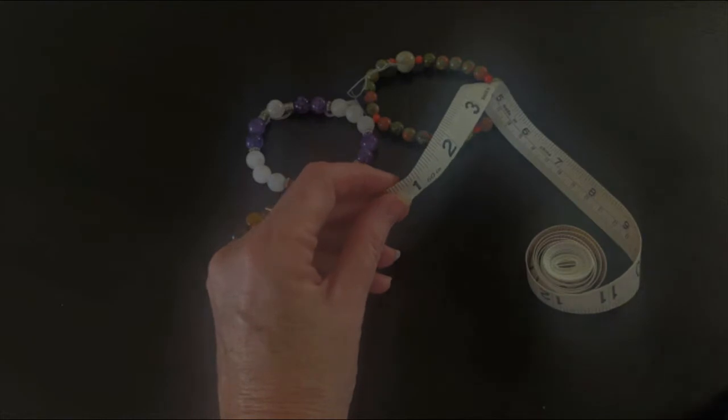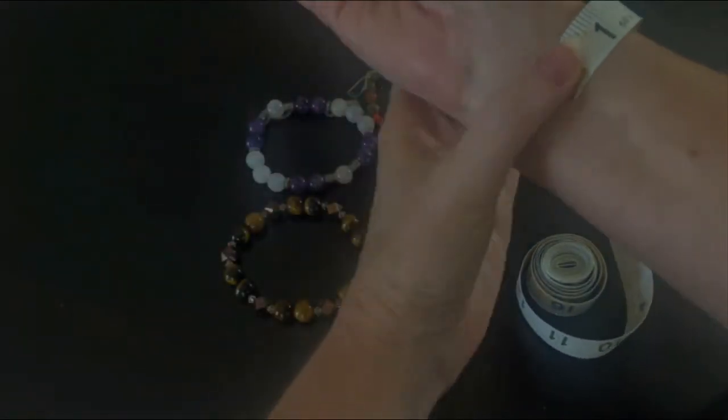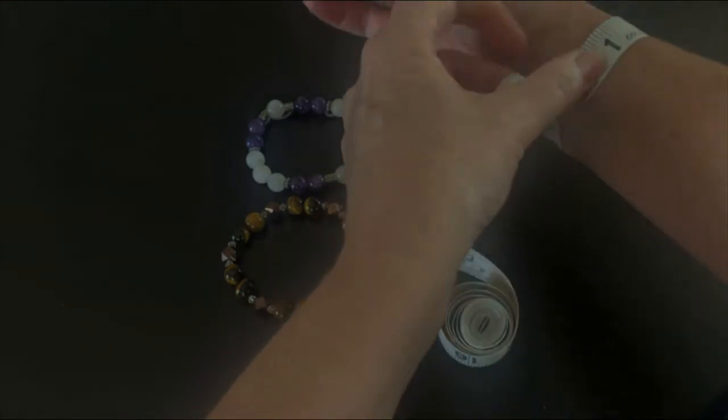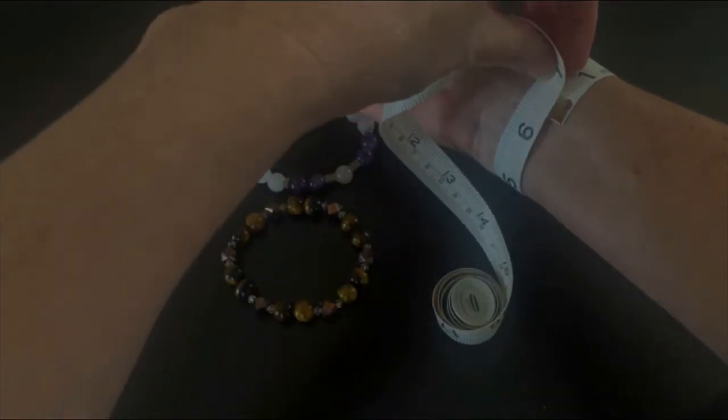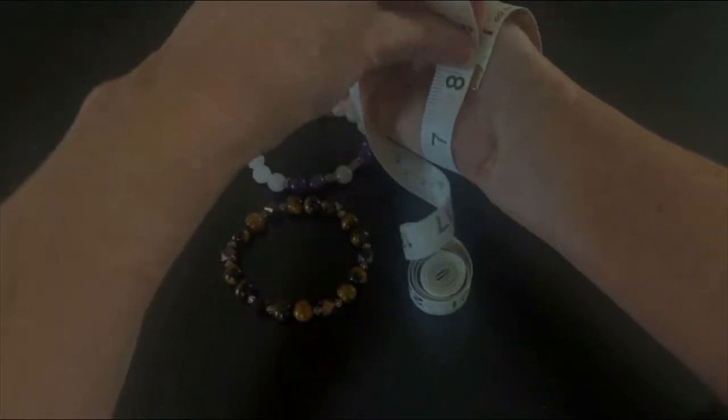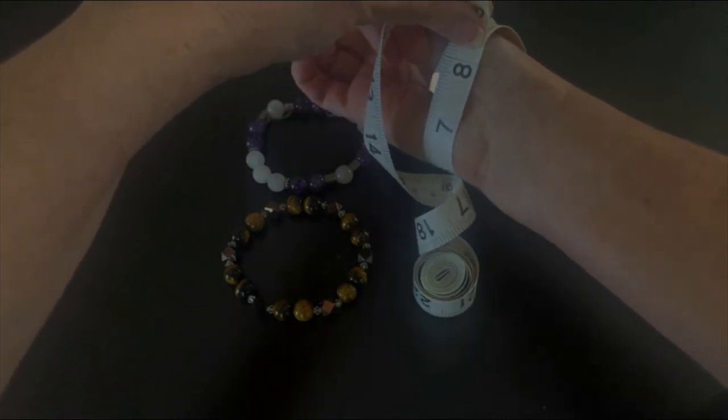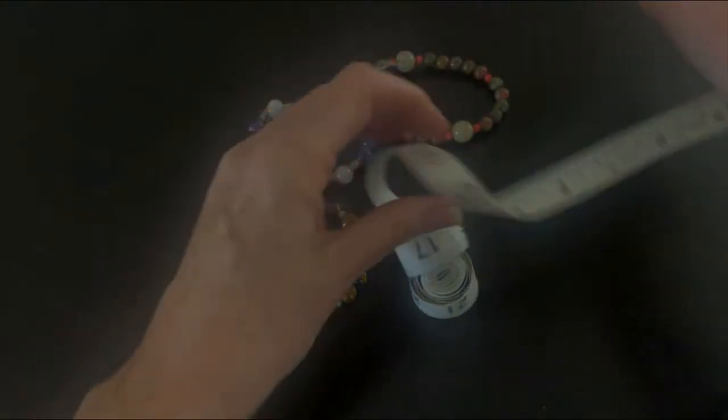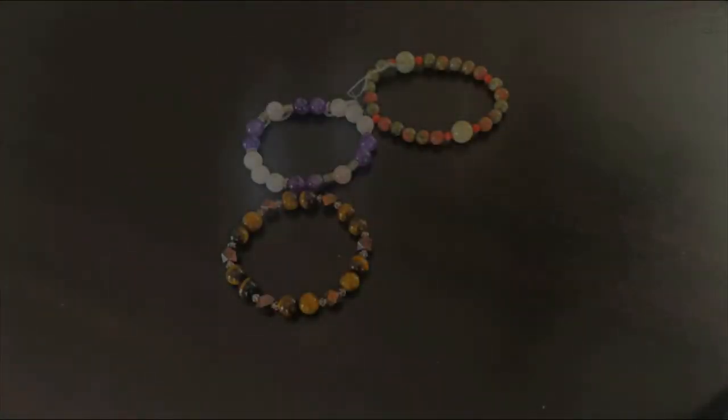When you're measuring for a bracelet, it depends where you would like to wear it. Here is about a six to a six and a quarter on my hand. If I come down here around my wrist, then I'm looking at maybe almost even seven and a quarter or so inches. I do find that if you measure straight like that, it is a little bit too big.